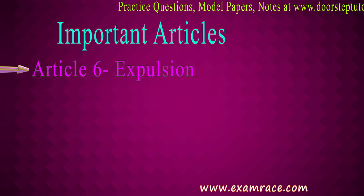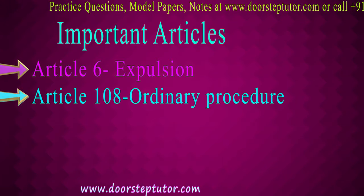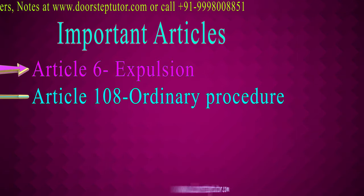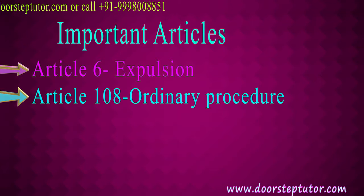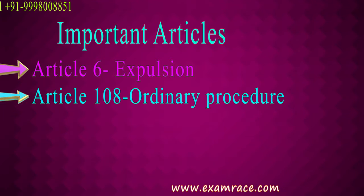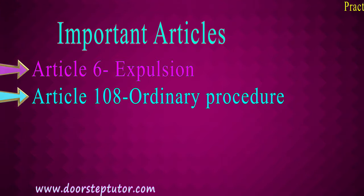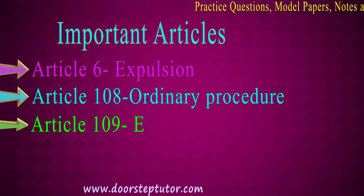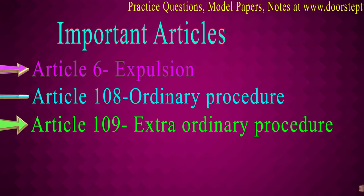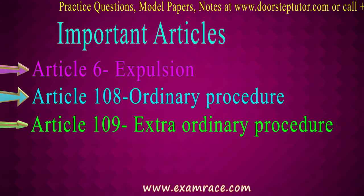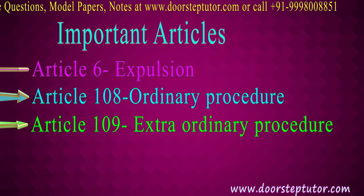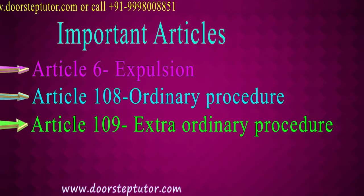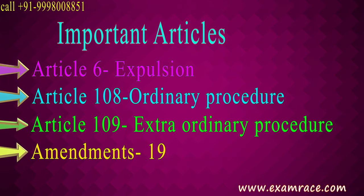Article 108 deals with the ordinary amendment procedure, requiring a vote of two-thirds of the members of the General Assembly along with ratification by two-thirds of the UN members, including all permanent members of the Security Council. Article 109 deals with the extraordinary procedure for reviewing the Charter, requiring a two-thirds vote of the General Assembly and a vote of any nine members of the Security Council to ratify it. Each member of the UN shall have one vote in the conference.